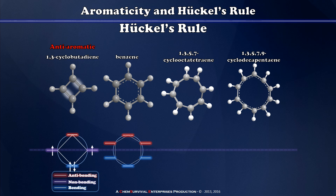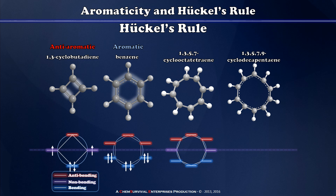Benzene, on the other hand, has a Frost circle which predicts that all six pi electrons go into bonding molecular orbitals, so benzene has a great deal of stability when flat and will be aromatic, giving those pi electrons free run of the entire ring. Cyclooctatetraene creates a Frost circle similar to cyclobutadiene's — there are non-bonding molecular orbitals, and when populated with the eight pi electrons, two go into non-bonding MOs. So cyclooctatetraene is anti-aromatic, has isolated pi bonds, and we even see it pucker out of a planar configuration specifically to avoid becoming aromatic.